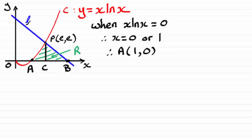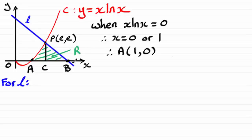To get the equation of L, I have a point on the line — the point P at (e, e) — which I can use as my (x₁, y₁) in the equation y − y₁ = m(x − x₁). But I need the gradient m. I can get that by working out the gradient of the tangent to curve C at point P, and then applying the perpendicular gradient rule.